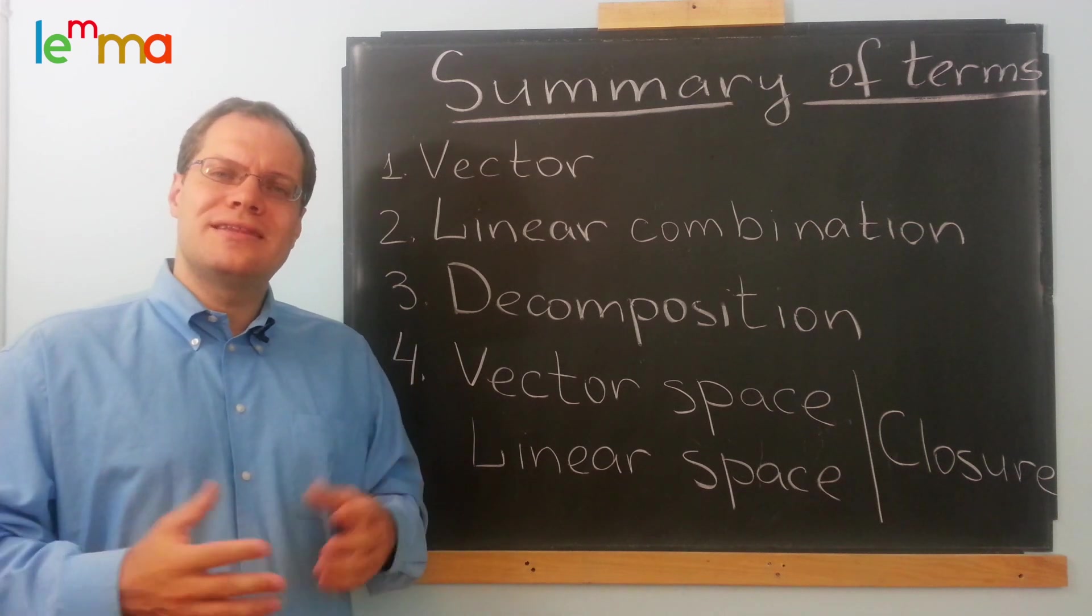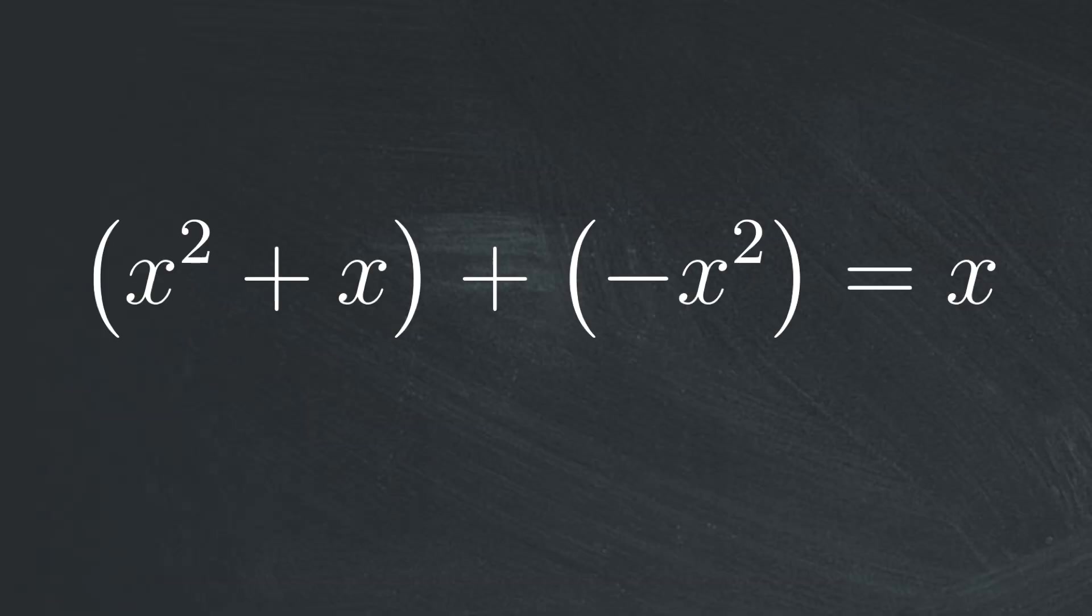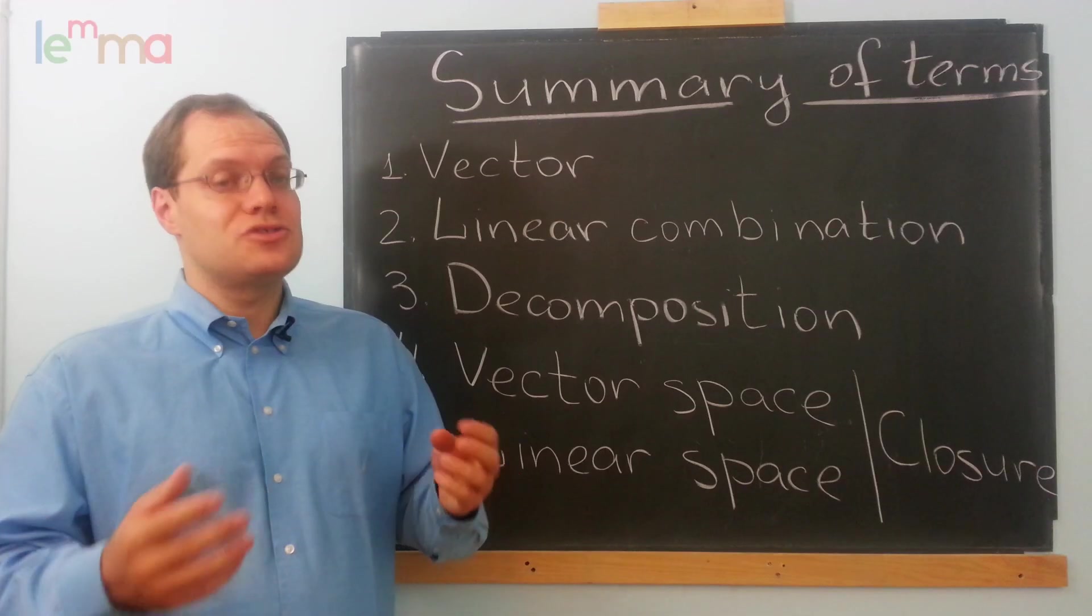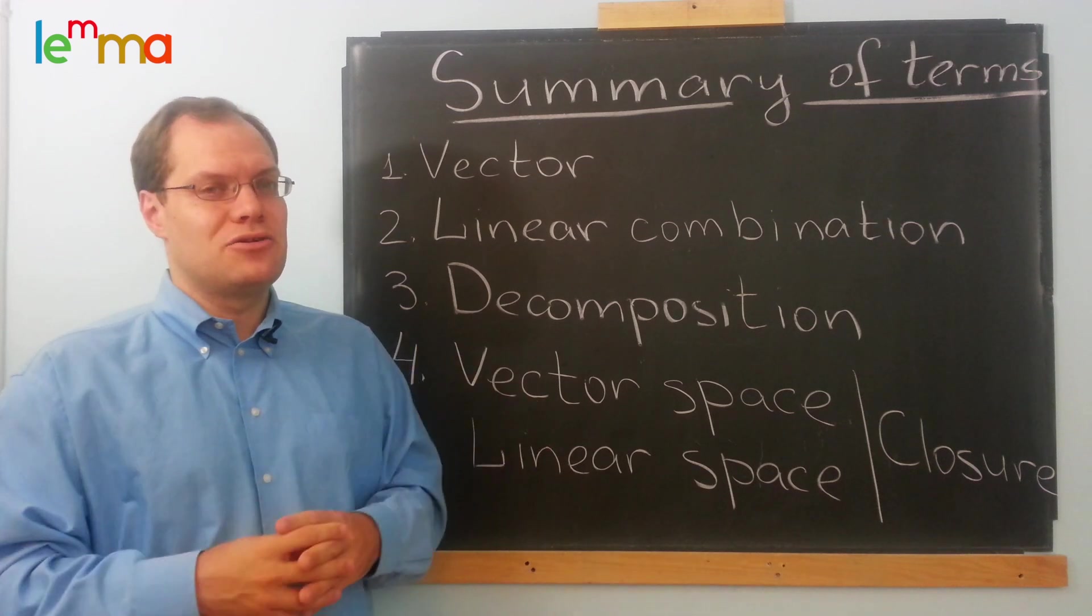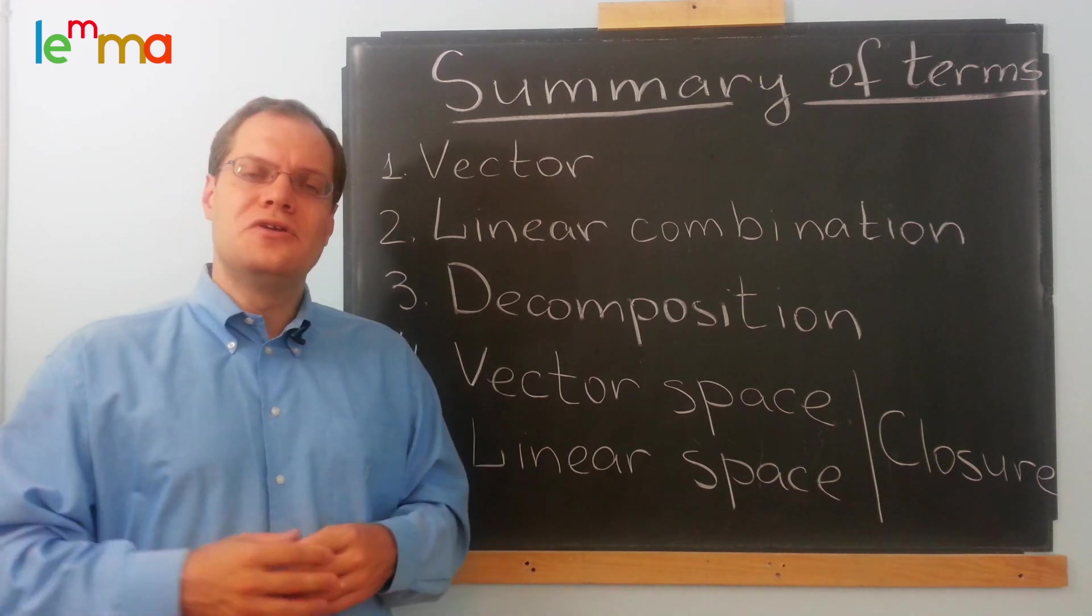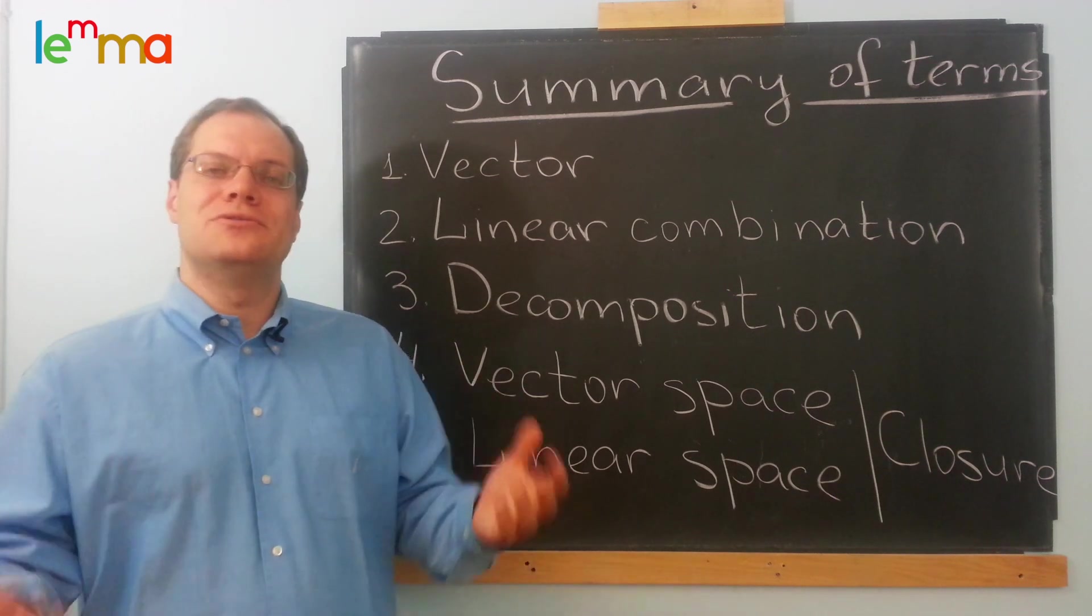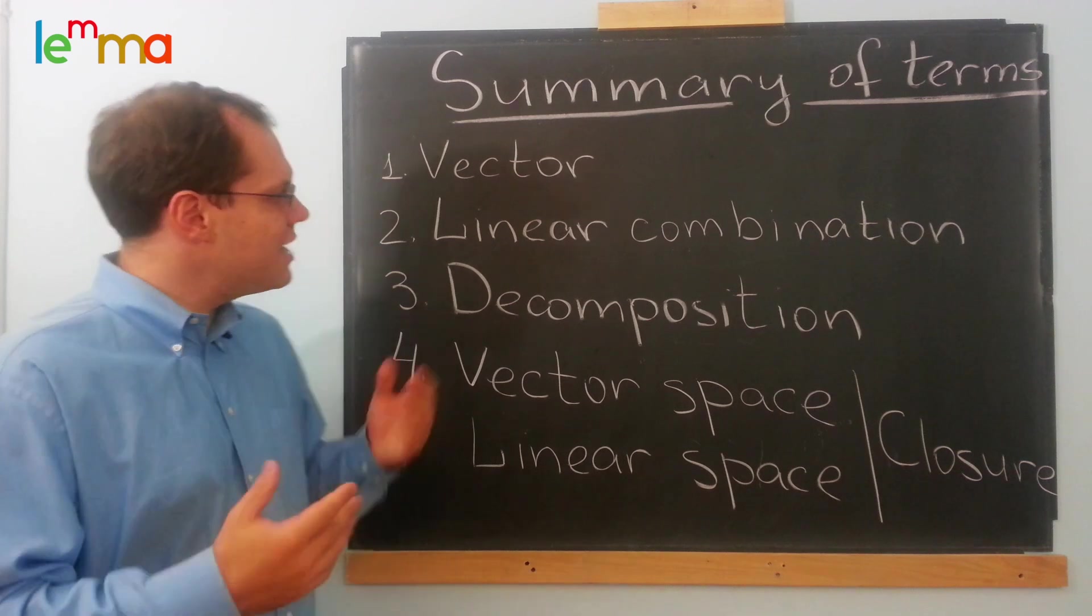You cannot really say that quadratic polynomials form a linear space. Let's take x squared plus x, and minus x squared. Their sum is x, and that's not a quadratic polynomial. So the sum of those two quadratic polynomials is not another quadratic polynomial. So you have to be careful. You have to say polynomials of degree two or less. That's why I use that terminology.